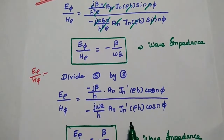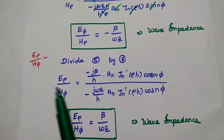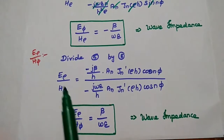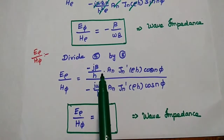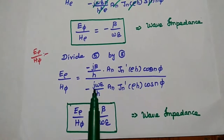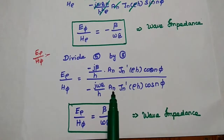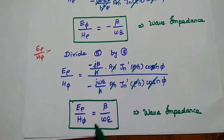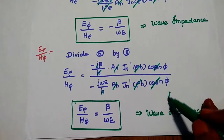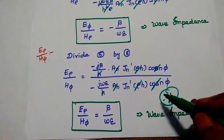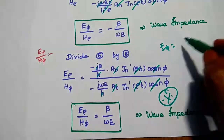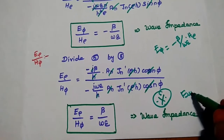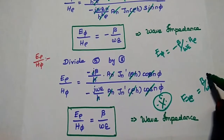Similarly, we can get the value of E rho by H phi. The fifth equation is minus J beta by H, AN JN dash of rho H cos N phi, and the eighth equation is minus J omega epsilon by H, AN JN dash of rho H cos N phi. Simplifying, we get E rho by H phi equal to beta by omega epsilon. This is the wave impedance for TEM waves. From this, E phi equals minus beta by omega epsilon multiplied by H rho, and E rho equals beta by omega epsilon multiplied by H phi.